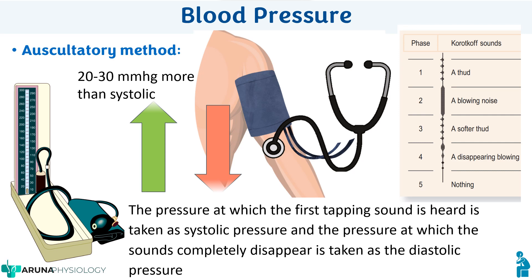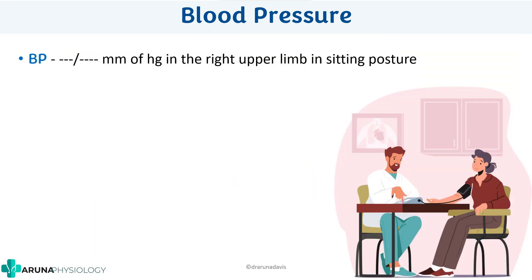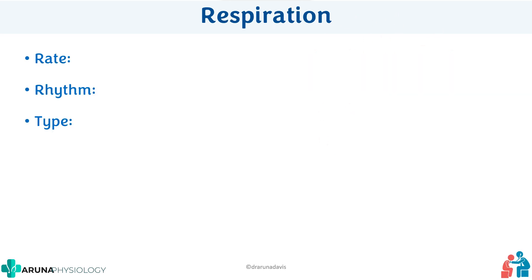Report blood pressure as systolic over diastolic in millimeters of mercury, specifying the limb in which it was taken and the posture of the patient — for example, right upper limb in sitting posture.